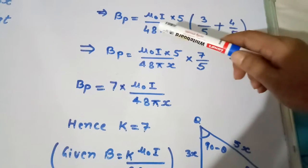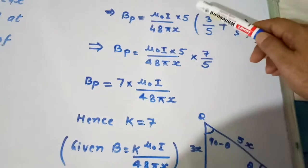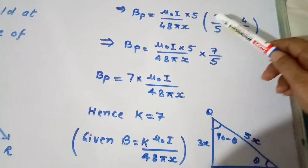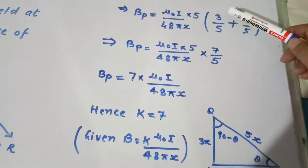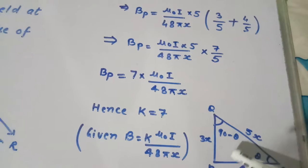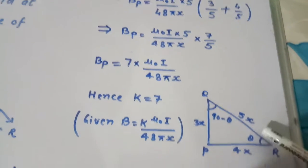Now we further evaluate: BP equal to μ₀I times 5 divided by 48πX times sin θ, which is 3 by 5 from here. It is clear sin θ will be 3X divided by 5X and sin(90 minus θ) will be 4X divided by 5X.